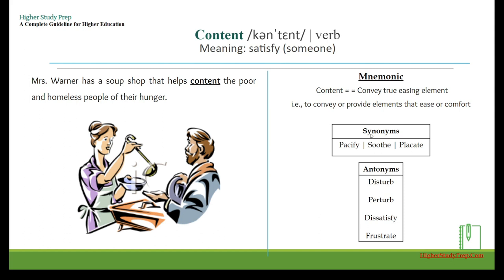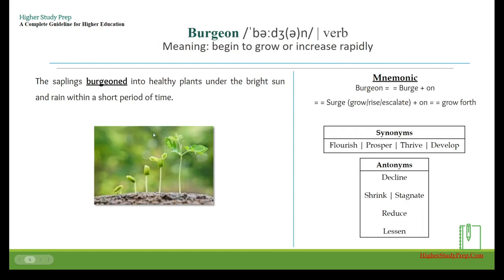Synonyms for the word content can be pacify, soothe, placate. Some antonyms are disturb, perturb, dissatisfied, frustrate. Burgeon — it's a verb which means to begin to grow or increase rapidly.